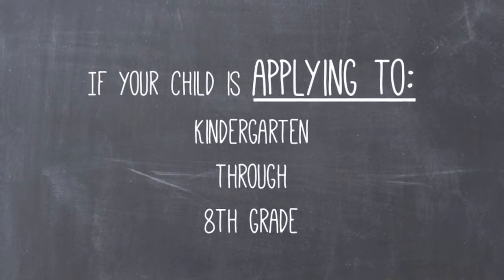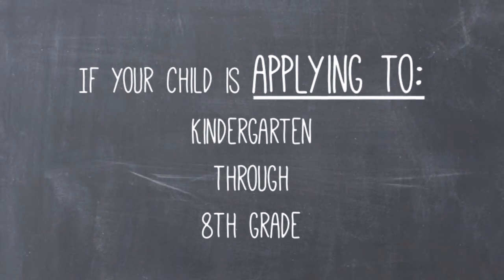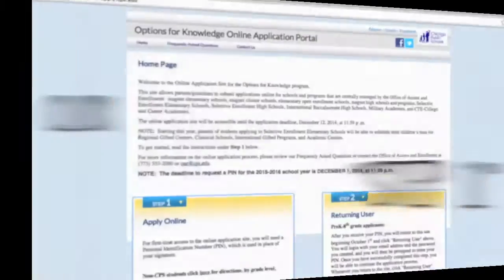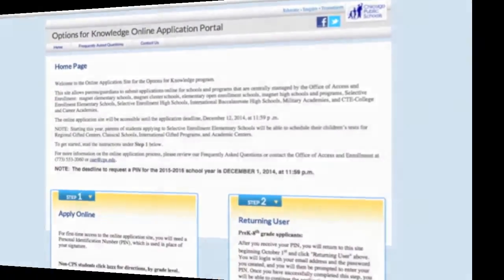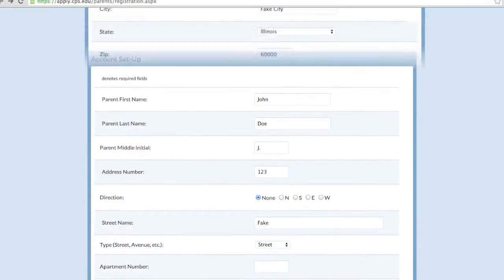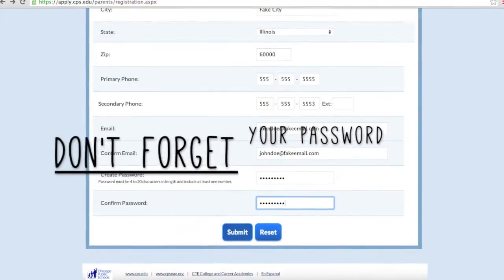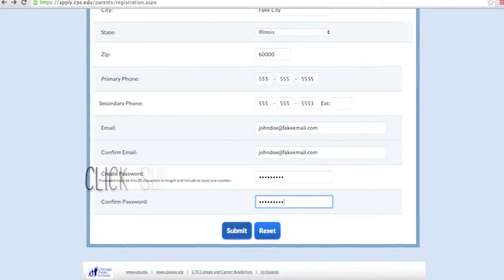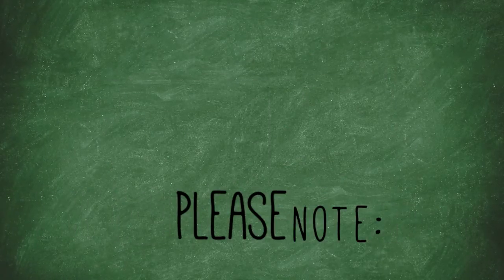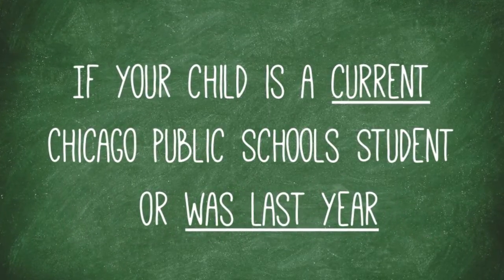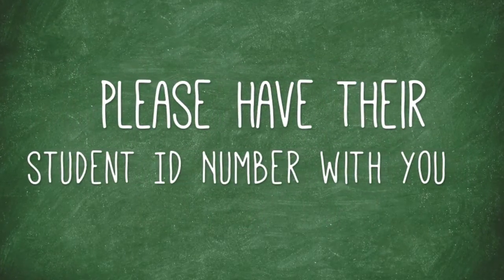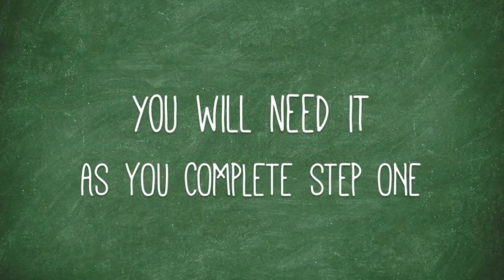If you have a child applying to kindergarten through 8th grade, go to apply.cps.edu and click Step 1. Complete the required fields to set up your account. Make sure you enter your email address correctly and create a password that you will remember. Once complete, click Submit. Please note, if your child is a current Chicago Public School student or was last year, please have their student ID number handy as we will ask you for this number as you complete Step 1.